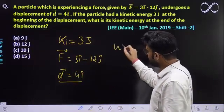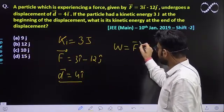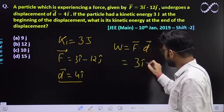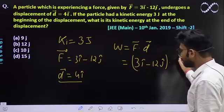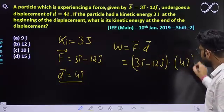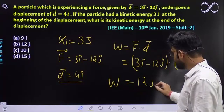Work done jaldi se nikaalte hai, work done kitna hooga? F dot ds, F dot d, hai na? It would be equal to 3i cap minus 12j cap dot product of 4i cap. Finally, the work comes out to be 12 joules.